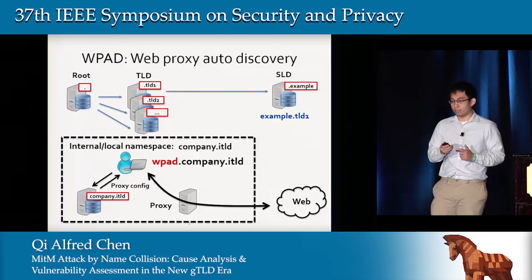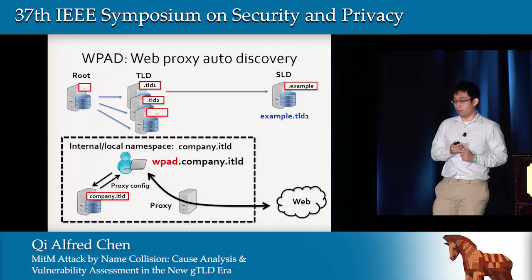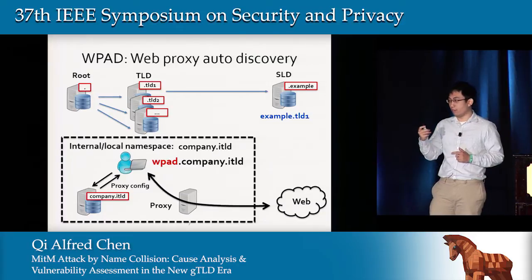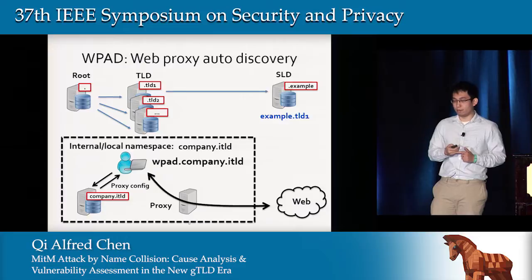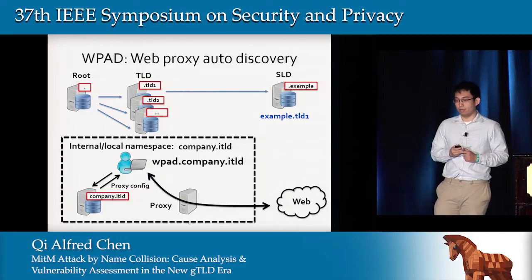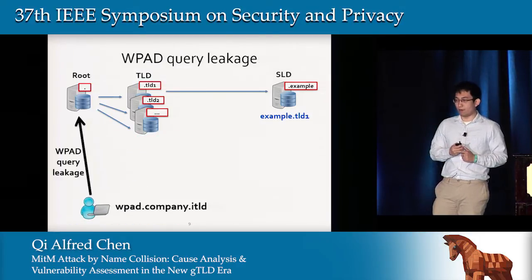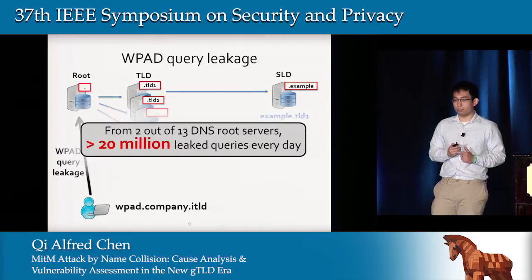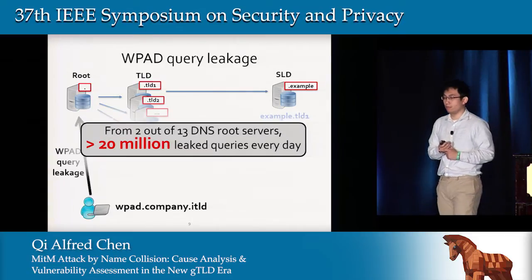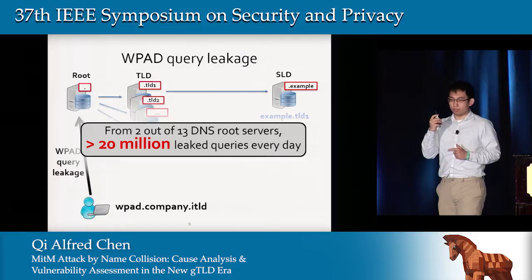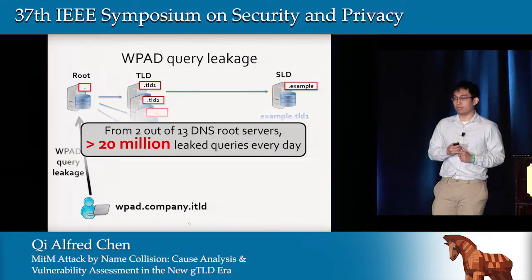This proxy can intercept all web traffic, making it very security-sensitive. Such leakage of WPAD queries to the public namespace should not happen. But surprisingly, this is happening now. Based on our measurement study, from just two out of 13 DNS root servers, there are over 20 million such queries leaked to the public namespace every day.